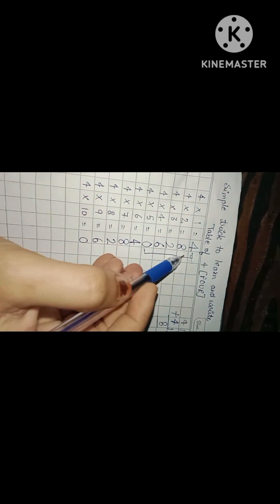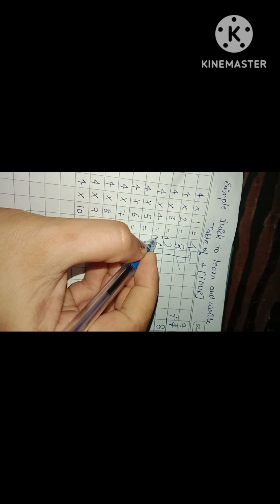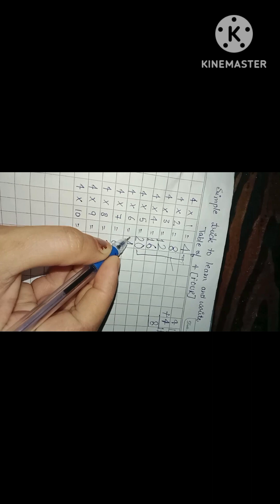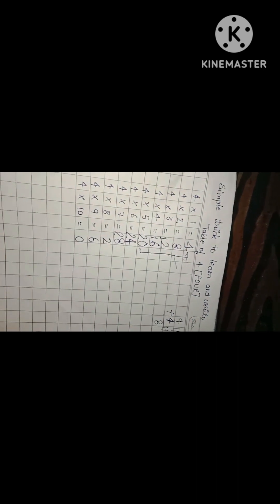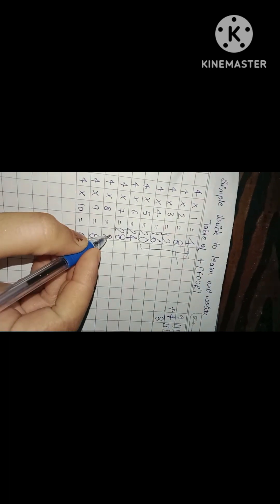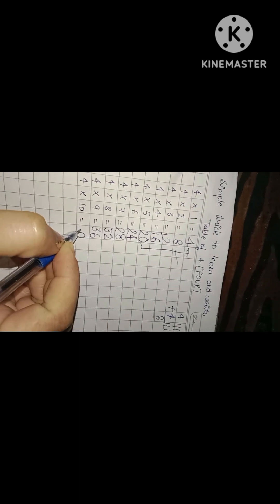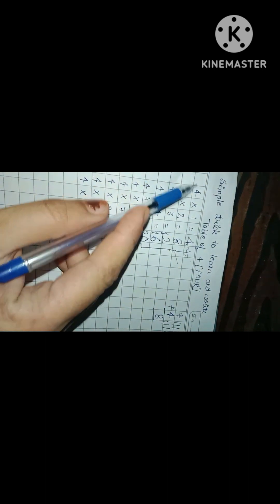4 times 1 is 4, we know. 4 times 2 is 8. Now we will write the tens place. Write 1 one time, then again 1 two times, then 2 three times, then 2 again, then 3 two times, then last one is 4.